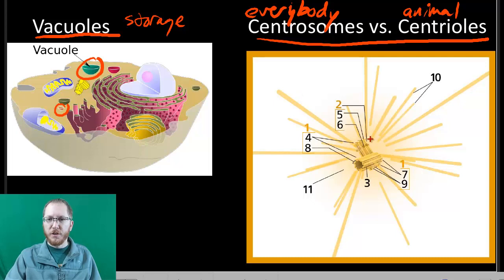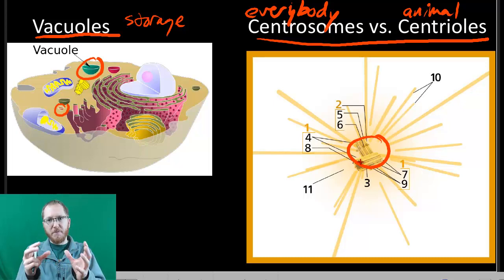The centrosome is just this region where we produce these microtubules, these cytoskeletal elements, that are used for stuff like cell division. Now, in animal cells, we'll also have these centrioles there, which will just be these hollow tubes that are made of microtubules. So there's just a bunch of them that kind of form this cylindrical hollow tube.